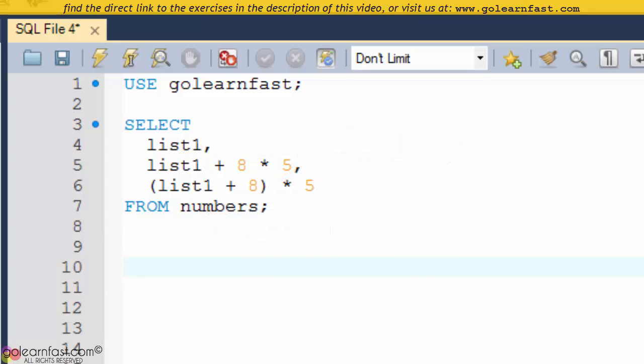When MySQL evaluates the expression in the second column, it performs the multiplication operation before the addition operation because multiplication comes before addition in the order of precedence.